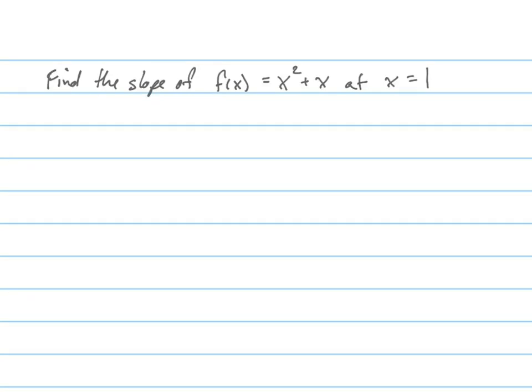So this question says, find the slope of this function at x equals 1. So let's think about what they're saying. What would this graph look like? Let's graph it real quick.